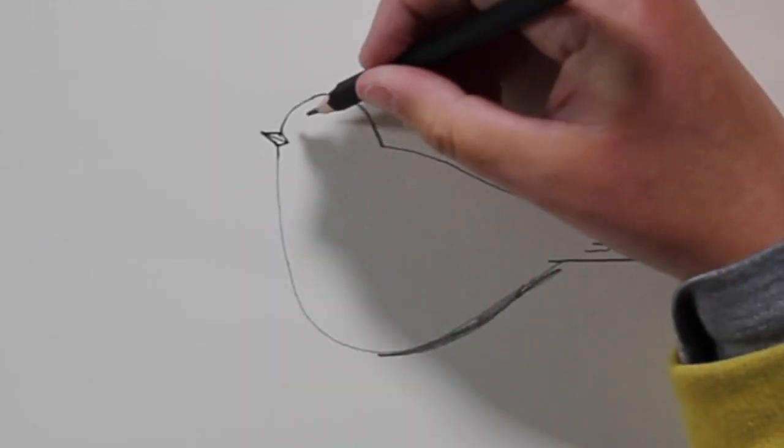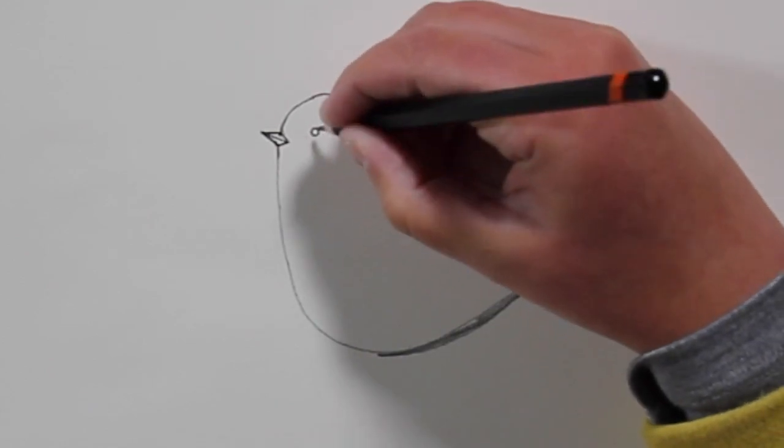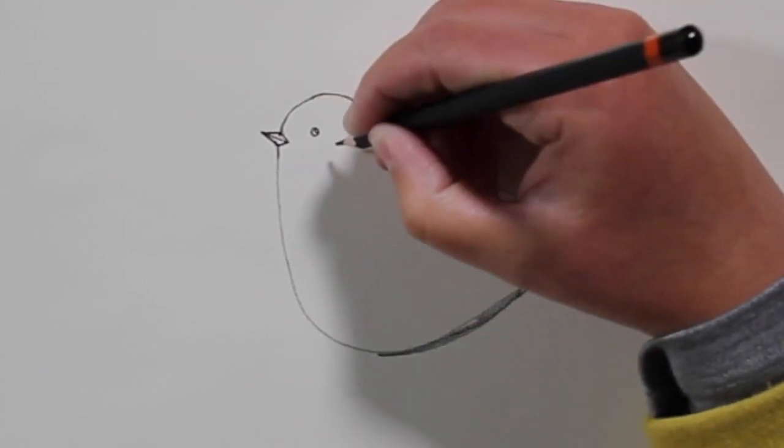So then we come back to the head and we're going to give our blue tit an eye and it's a small round eye and then we'll put a small circle in the top corner and then color the rest of it in.